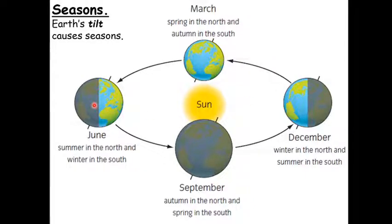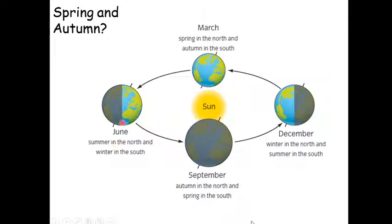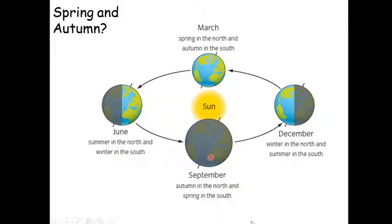When the Northern Hemisphere has its longest day in June, the Southern Hemisphere has its shortest day. So if it's summer in the Northern Hemisphere, it is winter in the Southern Hemisphere. Thinking about spring and autumn: the December position shows the axis tilted away and the June position tilted towards in the Northern Hemisphere. Spring and autumn tend to have very similar temperatures to each other and also similar day length, so there's not that much difference between them.